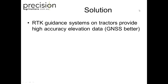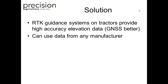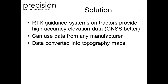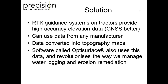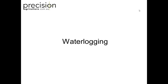Just about every guidance system available now in tractors will also provide you with high-accuracy elevation data, and that's very important for looking at water flow. This elevation data is extremely accurate — less than five centimetres vertically — which means you can collect lots of information over the whole field. If you're doing a seeding operation going every 8 or 9 metres, you're collecting a huge amount of elevation data. We grab that data and convert it into topography maps as a first step. We're also using OptiSurface, which has really changed the way we look at waterlogging and erosion control in Australia.